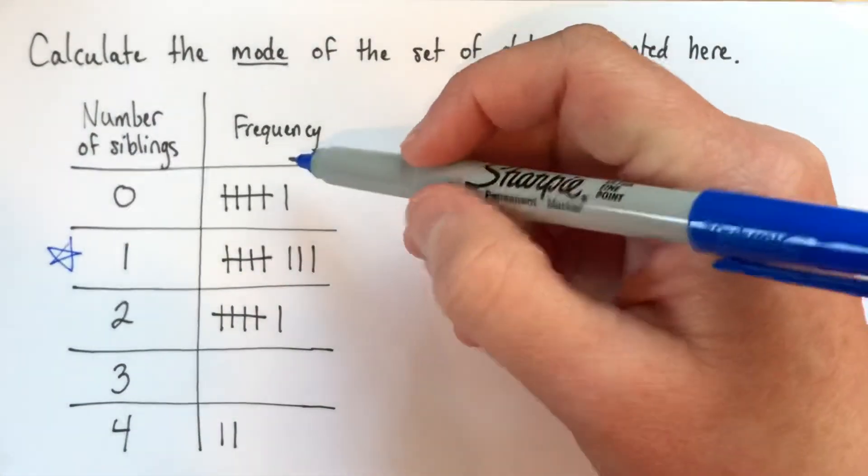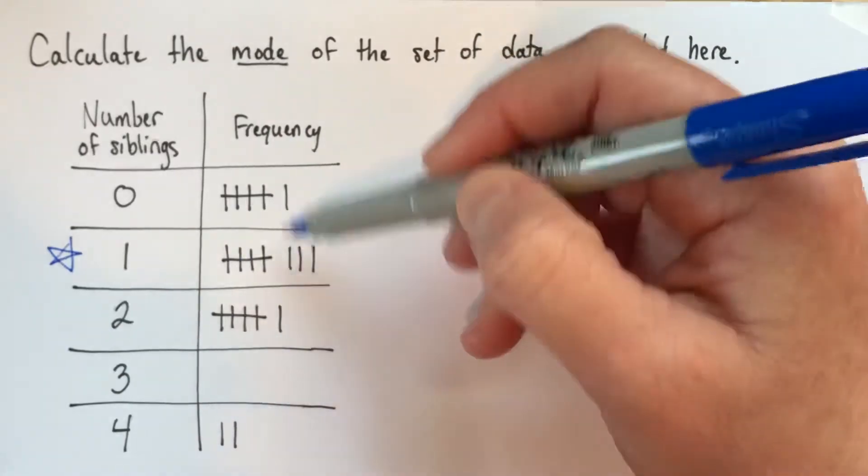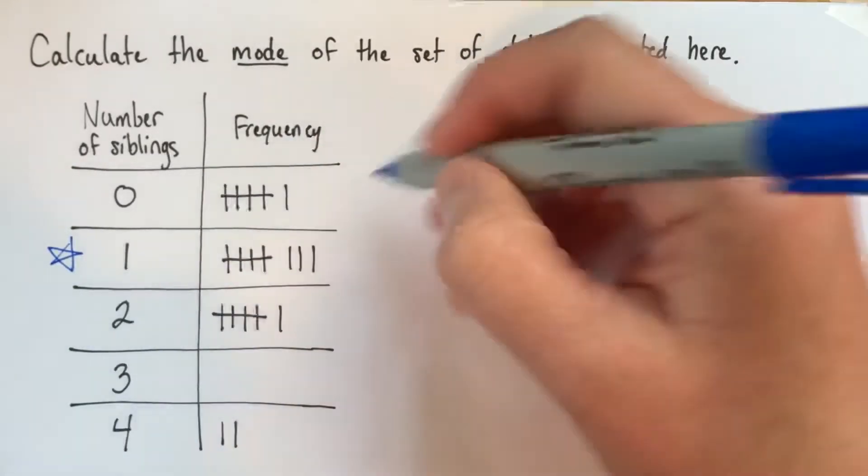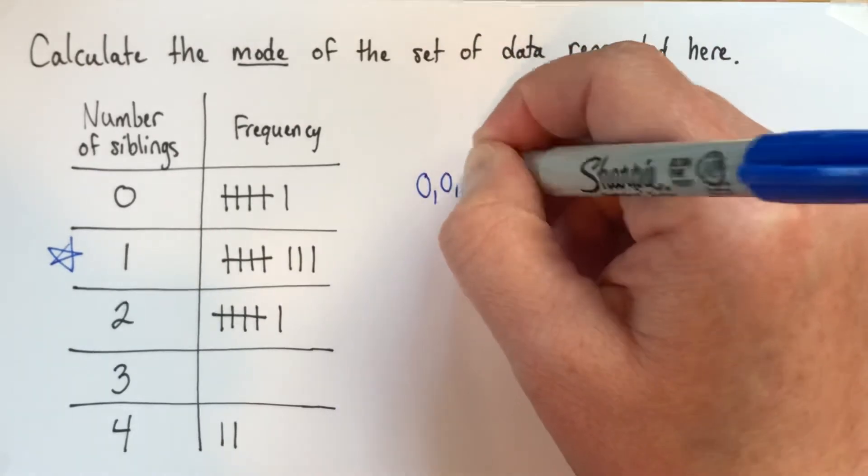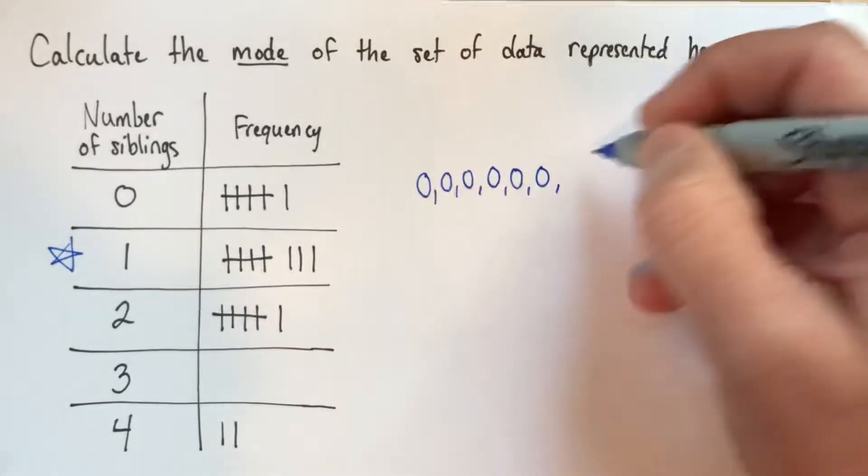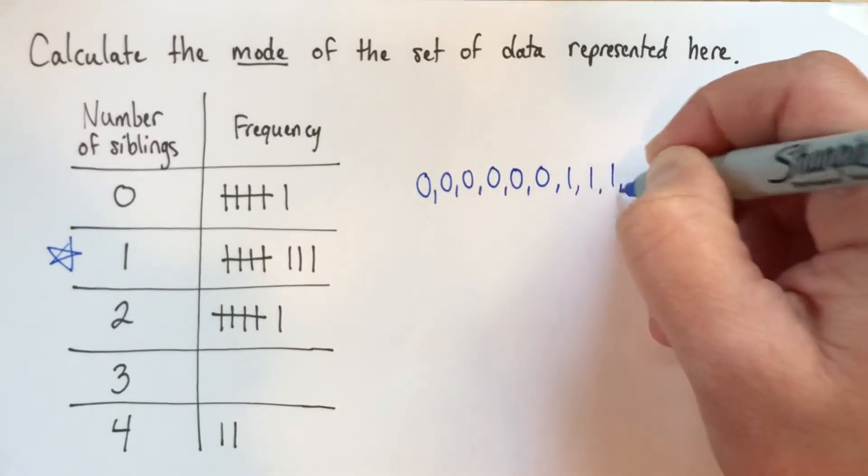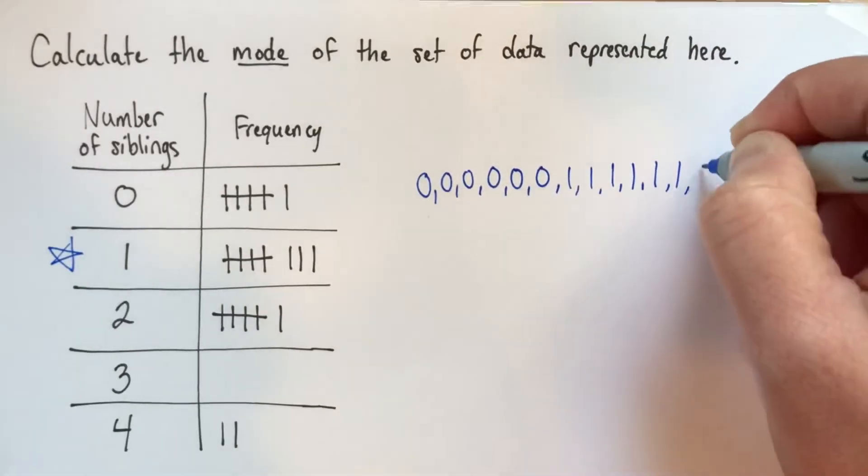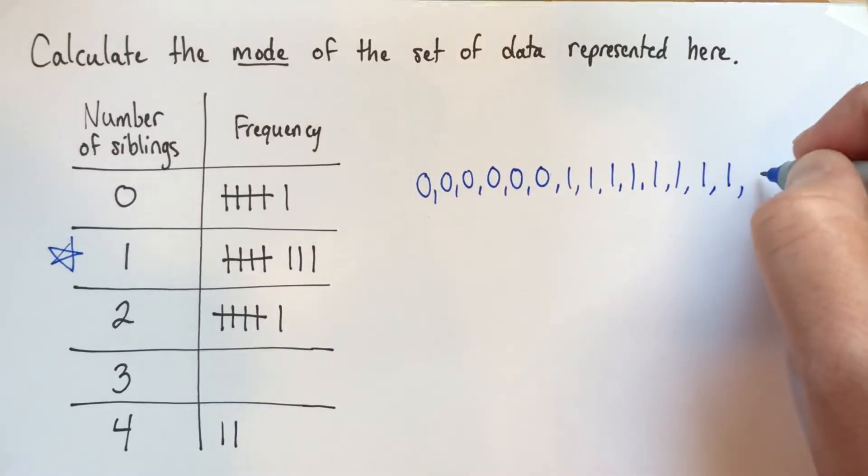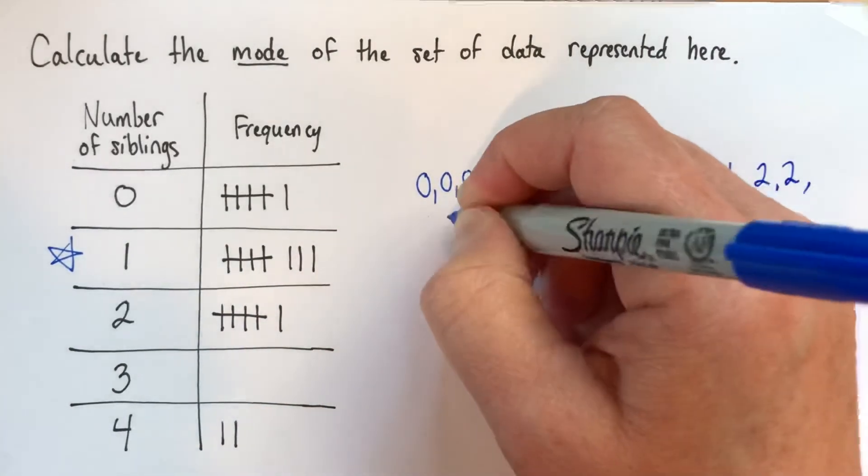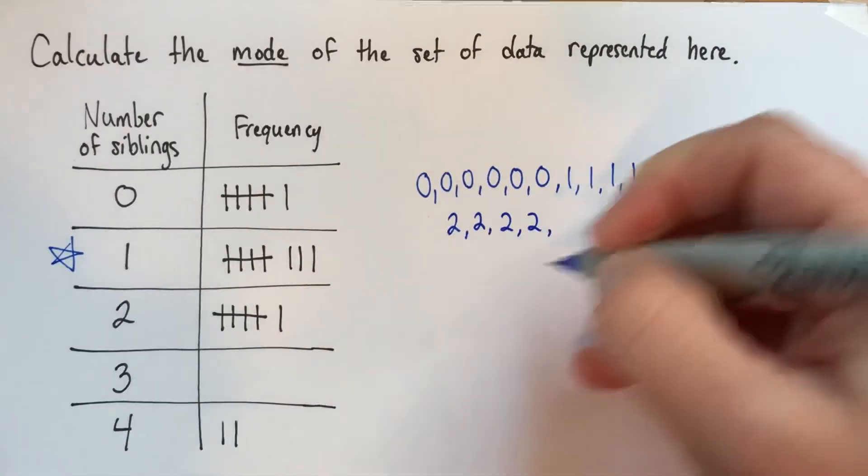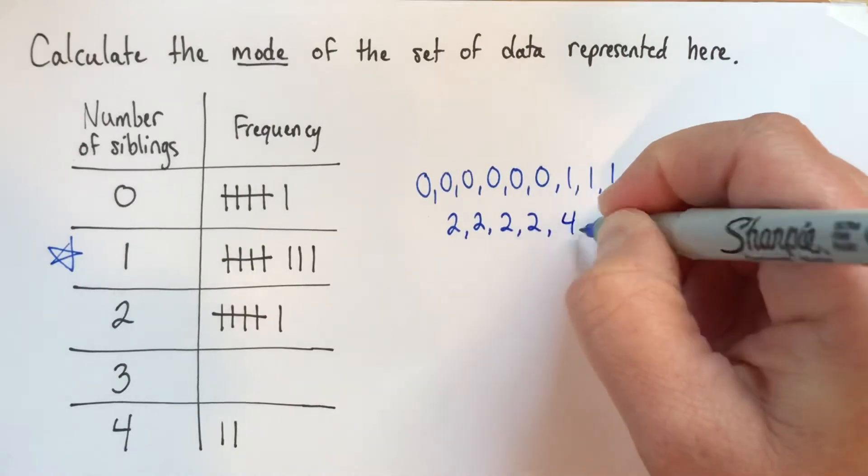To explain that a slightly different way, I'm going to go from this frequency table back to just a list of numbers. We have 6 zeros, then 8 ones, then 6 twos, then no threes, but we have 2 fours.